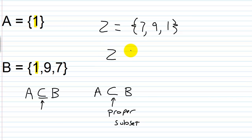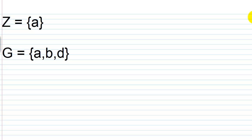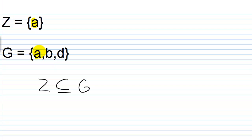Here we'd have to say that Z is a subset of B using the subset symbol. Recall that I can use this symbol whether it's a proper subset or they're equal. The main thing is that you understand why A is a subset of B — it's because B contains all elements of A. As another simple example, if set Z contains one element, the letter A, and set G contains three elements — A, B, and D — then Z is a subset of G. Since Z and G are not equal, Z is a proper subset of G.